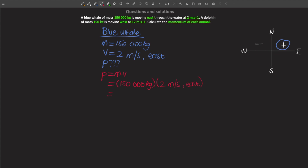150,000 kilograms multiplied by two meters per second gives us 300,000 kilogram meters per second. There is no need to write east because the positive sign already indicates the eastern direction, but you can write east for assurance. Now pause the video and attempt the second part of the problem on your own.